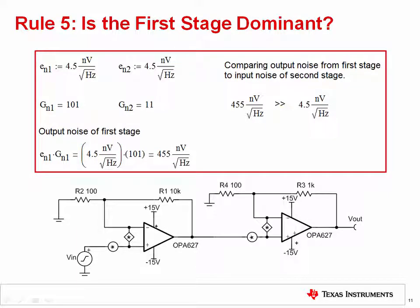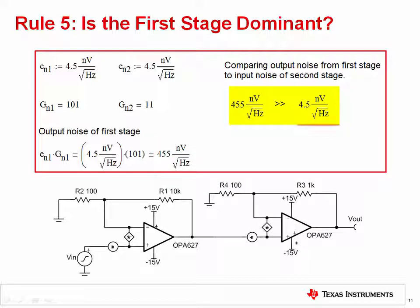Rule 5 tells us that the first stage noise is normally dominant. This will usually be the case, but it is always best to check if the first stage gain is low or if the following stages use amplifiers with higher noise. In this case, the first stage's noise gain is 101 and a low noise amplifier is being used for both stages, so it is likely that the input stage noise will be dominant. Comparing the first stage output noise with the second stage input noise, the output noise from the first stage is 101 times greater than the input noise from the second stage. Thus, you can safely ignore the noise from the second stage to simplify your calculations.